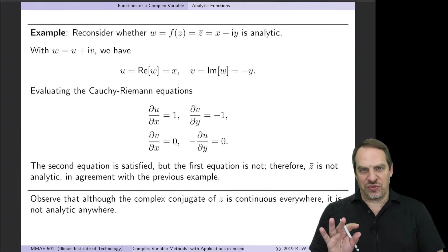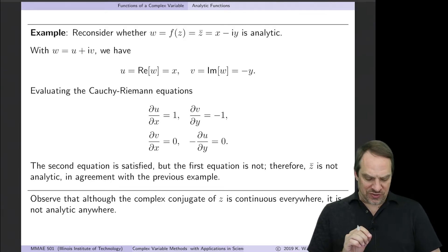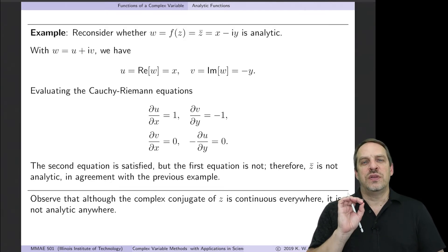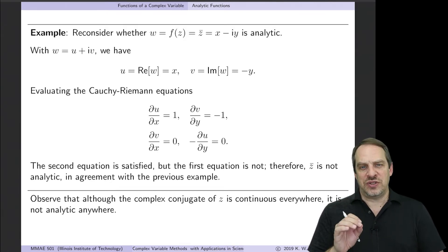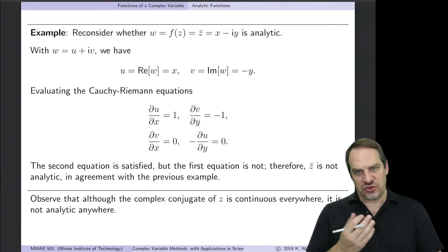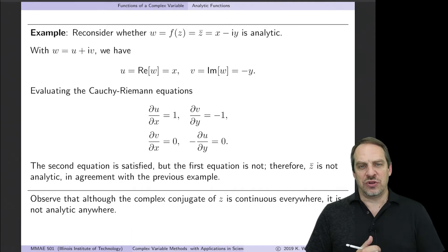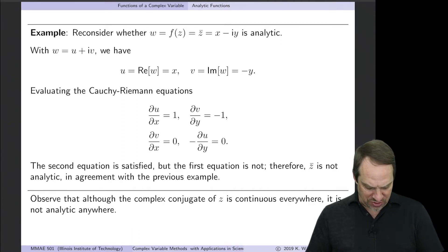The Cauchy-Riemann equations are not satisfied — both equations have to be satisfied — and therefore the complex conjugate of z is not an analytic function. Same conclusion as before, but in a much simpler way.